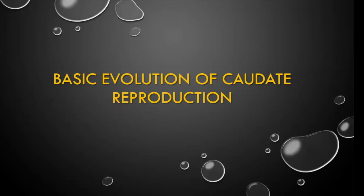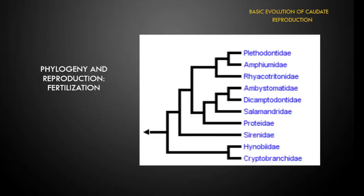Starting with a basic understanding of caudate reproduction: here's a phylogenetic map of caudates from the bottom — most primitive — to the top — most evolved. Of course, primitive does not mean worse; it means the most successful, meaning they haven't had to change anything over time. At the bottom we have cryptobranchids and at the top plethodons.